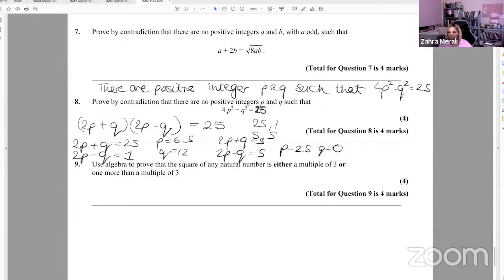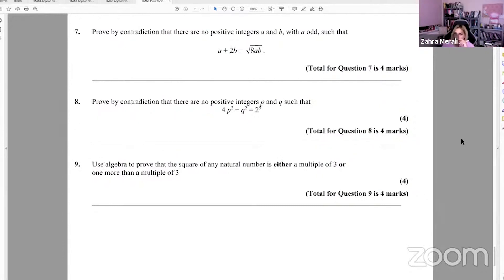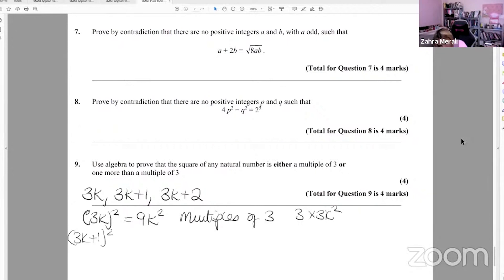Question nine, use algebra to prove that the square of any natural number is either a multiple of three or one more than a multiple of three. So because we're not thinking of evens and odds, we're now thinking of multiples of three, we have to consider all numbers are either going to be, say, 3k or 3k plus 1 or 3k plus 2. Because the minute we make it 3k plus 3 is the same as 3k with another k. You could have done minus 1 as well. And we're going to prove that the square of these is either a multiple of three or one more. So we take each single one and we square it. So 3k squared, which gives you 9k squared. And you'd say this is a multiple of three. Or you could have written three times just to make it super clear.